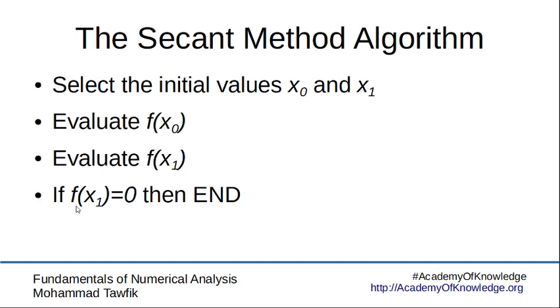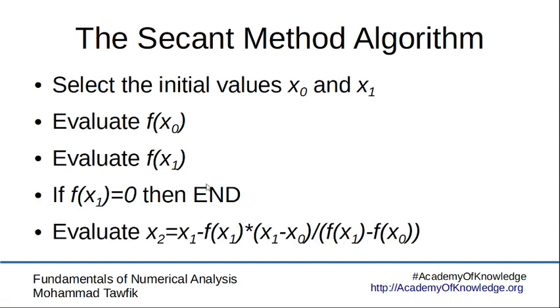Then if I'm lucky, f of x1 is zero, and if otherwise, then evaluate x2, the new guess. This is going to be evaluated using the relation of the secant method, which we derived here, in this video.